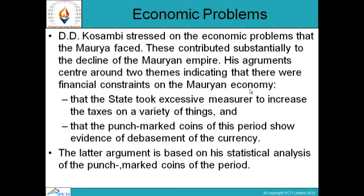Economic Problems: D.D. Kosambi stressed the economic problems that the Mauryans faced, which contributed substantially to the decline of the Mauryan Empire. His arguments center around two themes indicating financial constraints on the Mauryan economy: the state took excessive measures to increase taxes on a variety of things, and the punch-marked coins of this period show evidence of debasement of the currency. This statistical analysis of punch-marked coins reveals the financial constraints on the Mauryan economy.